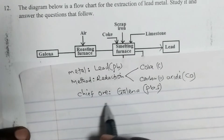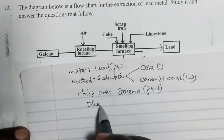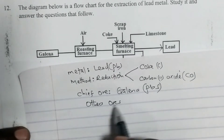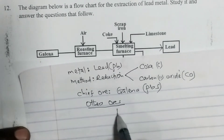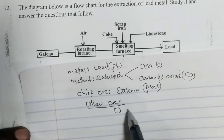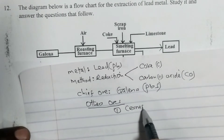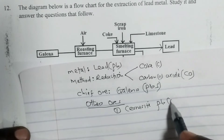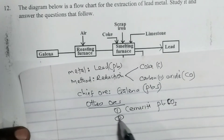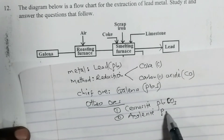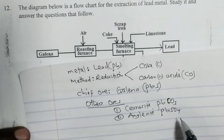We also have other alternative ores. One, in cases where we don't have the chief ore, we can use cerussite, which is a lead carbonate. We can also use anglesite, which is lead sulfate.